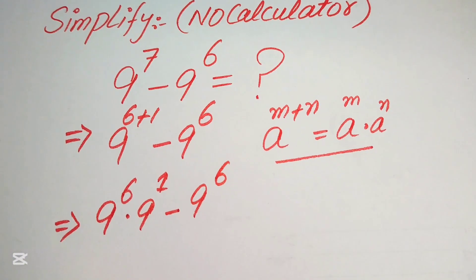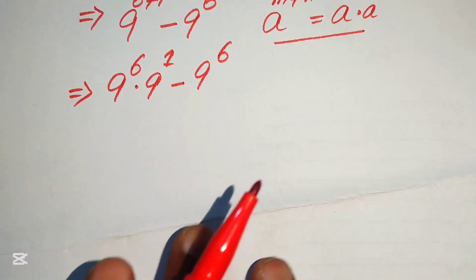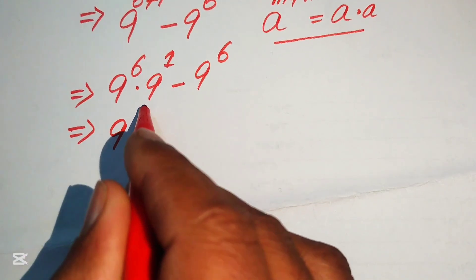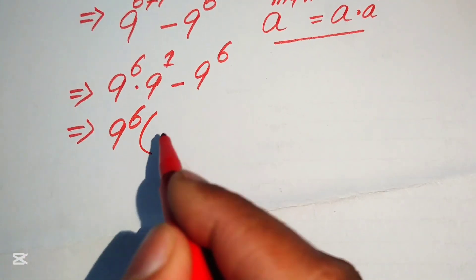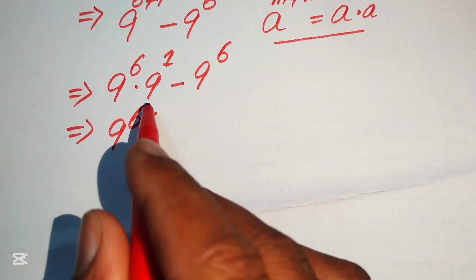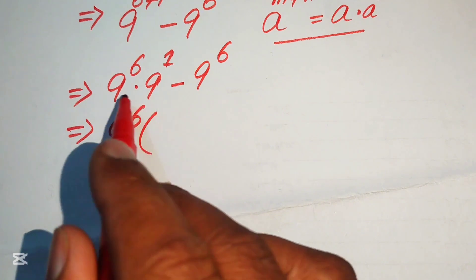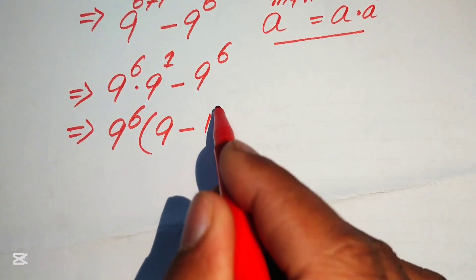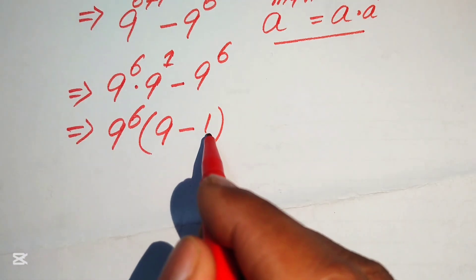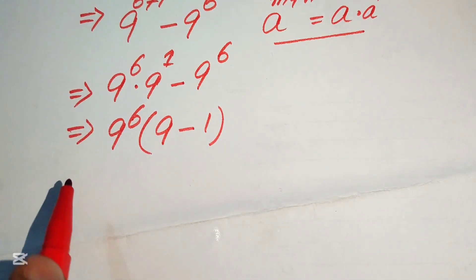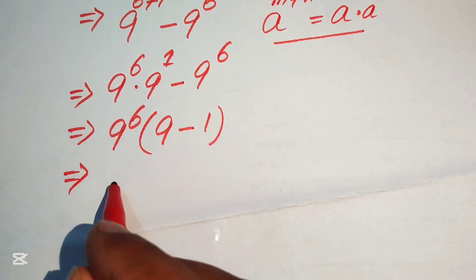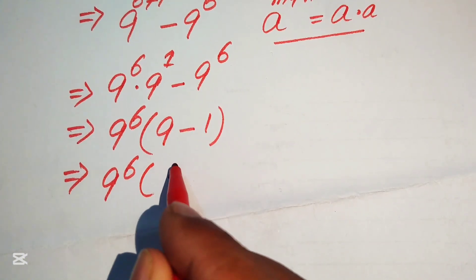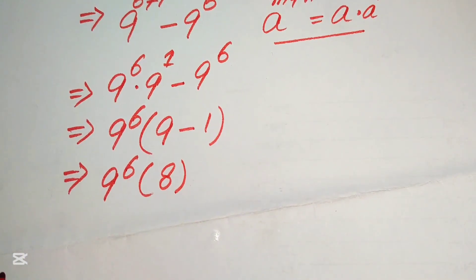We see that 9 to the power of 6 is a common term, so we factor it out. Taking 9^6 common gives us 9^6 times (9 minus 1), which equals 9^6 times 8.